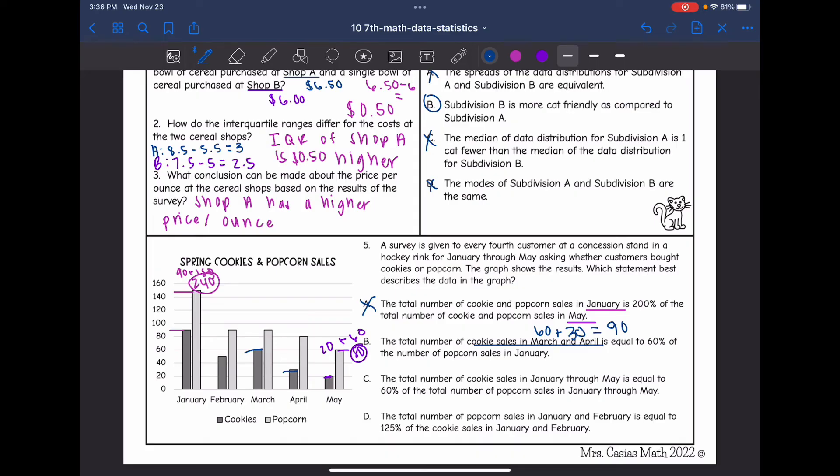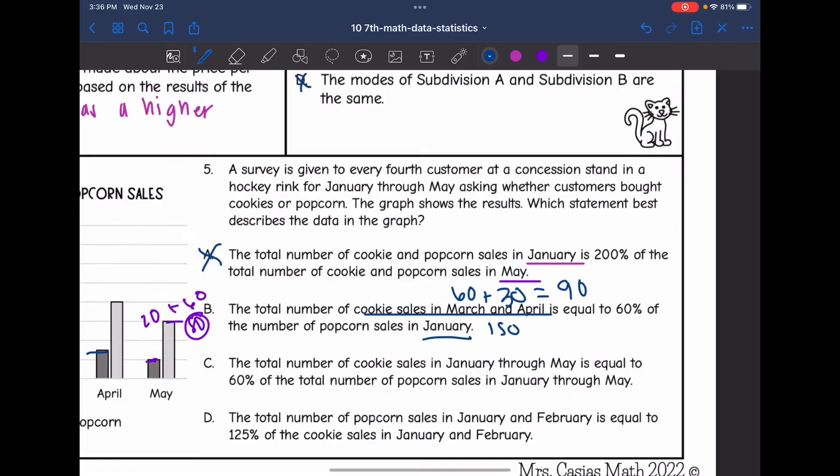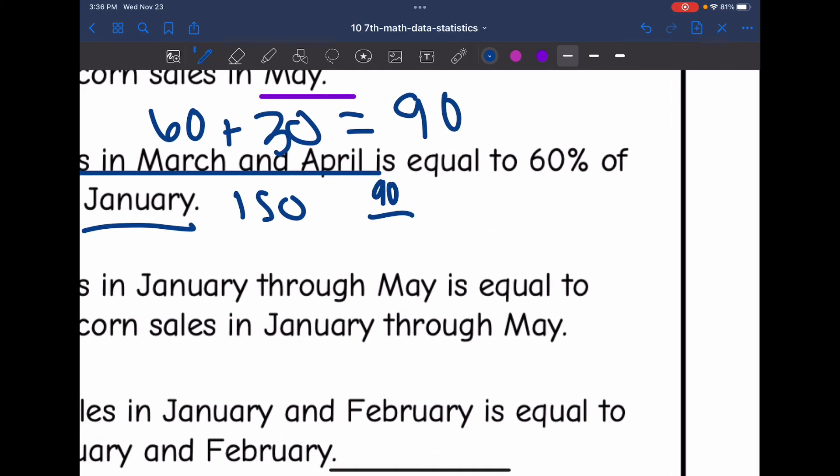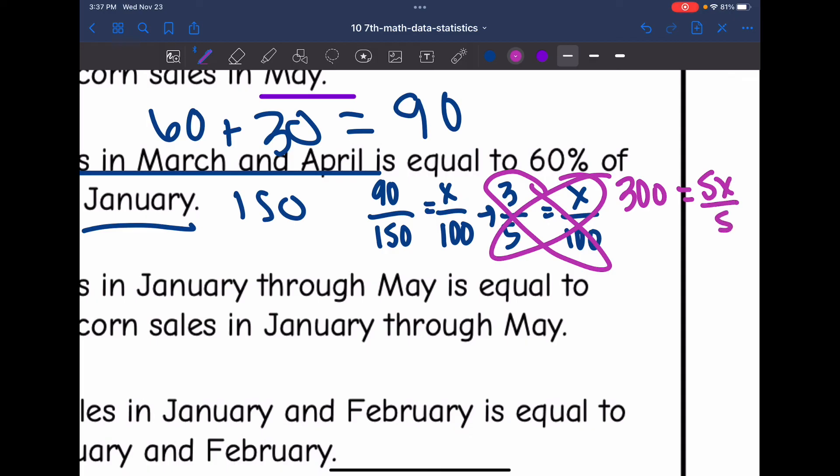And then January had 150 popcorn sales. So let's do a percent proportion and see if that 90 out of 150 is equal to 60%. First I'm going to divide both of those numbers by 30 and I get 3 out of 5 equals x out of 100. Then I'm going to cross multiply to solve and I get 300 equals 5x. And then I divide by 5 and I get that 60 equals x.